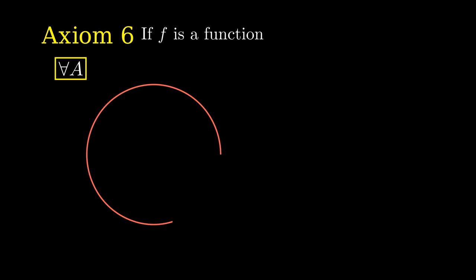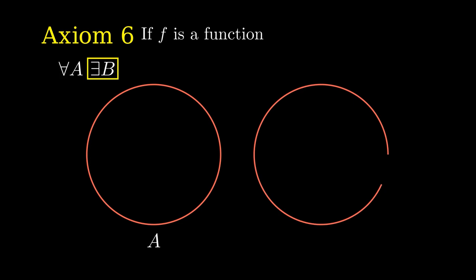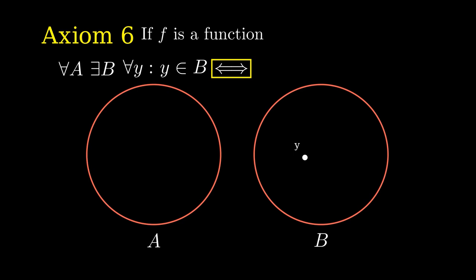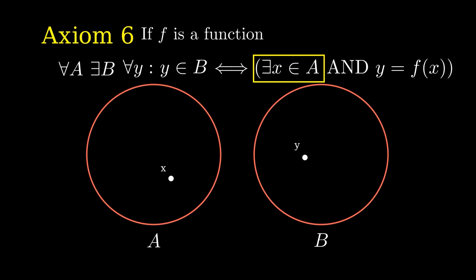Formally: if F is a function, then for every A there exists B such that for every Y, Y belongs to B if and only if there exists X in A such that Y equals F(X). So B is the image of every element of A under the action of F.